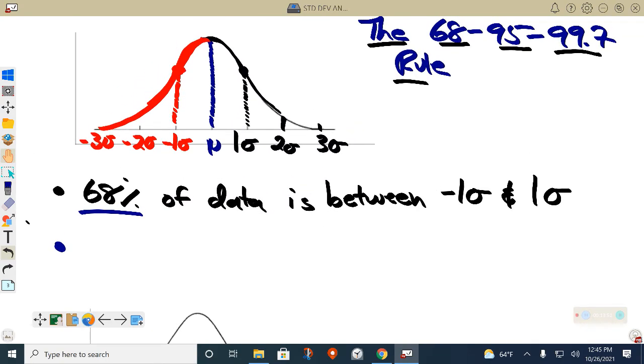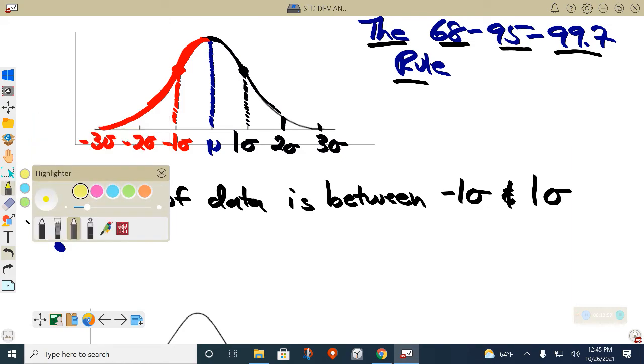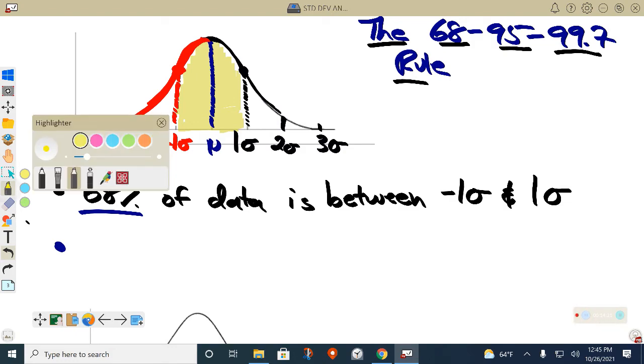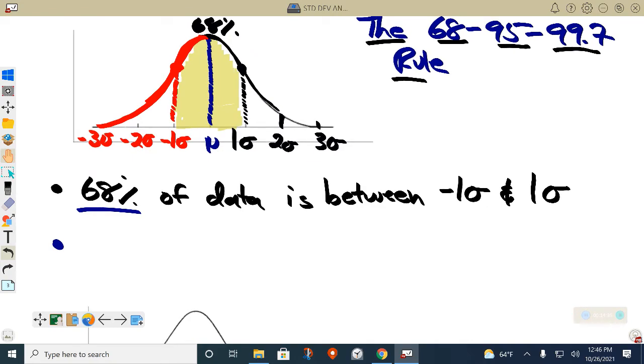In other words, let me get a little highlighter. Do the best you can to highlight, but everything I'm highlighting in yellow, look at this curve. All this I'm highlighting in yellow, notice how that's all the data that's in between negative 1 standard deviation and 1 standard deviation above. That's 68% of the data, what I just highlighted in yellow.